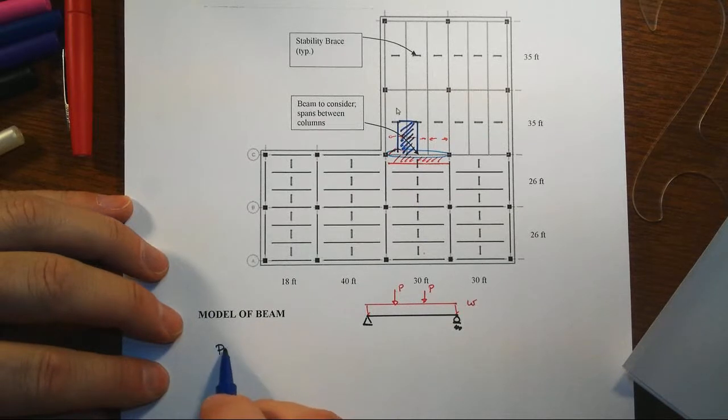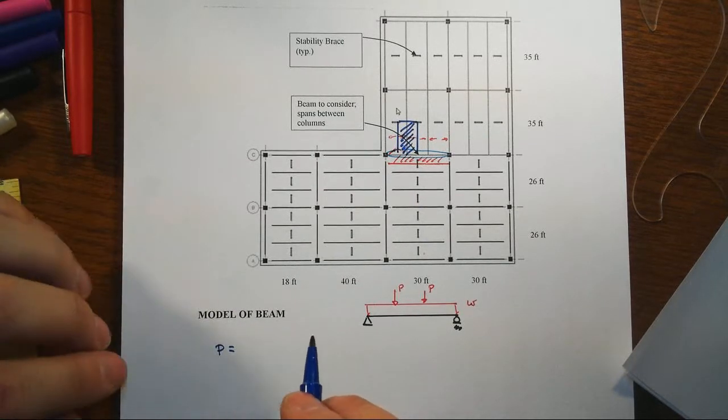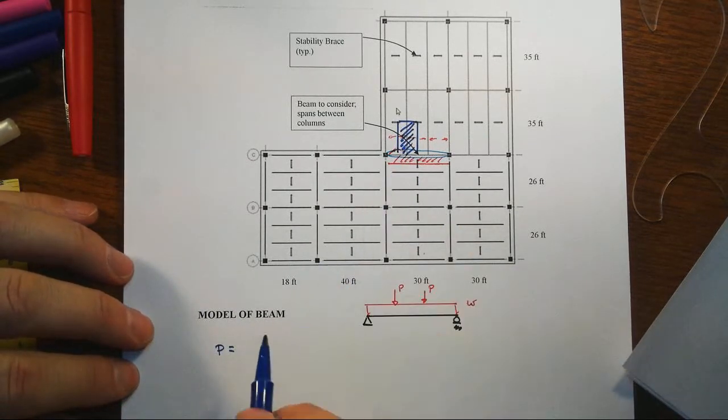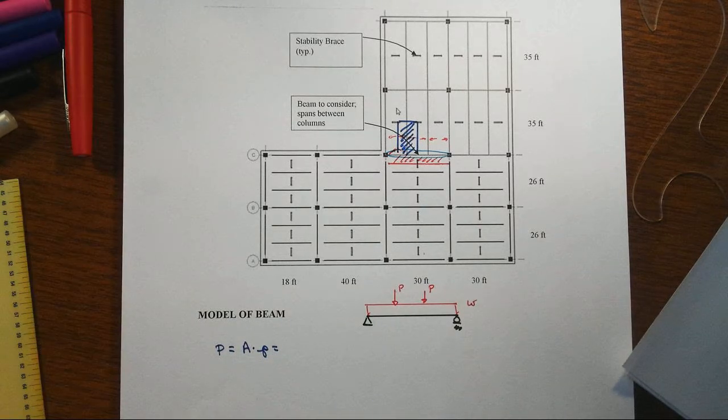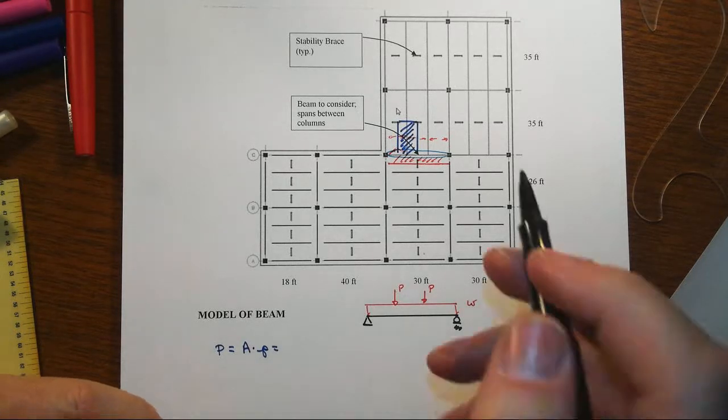Alright, so that P, that concentrated force then, we're going to have to find that area times that pressure that's on the floor, which we're told that total equivalent floor loading is 150 PSF. And so let's go see what we've got here.